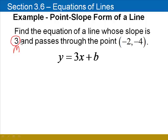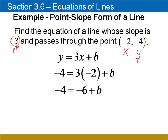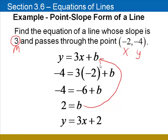Now we need to find the value of b by substituting negative 2 for x and negative 4 for y. Now I know that b equals 2. I need to take that value back up to the original equation and substitute for b. y equals 3x plus 2.